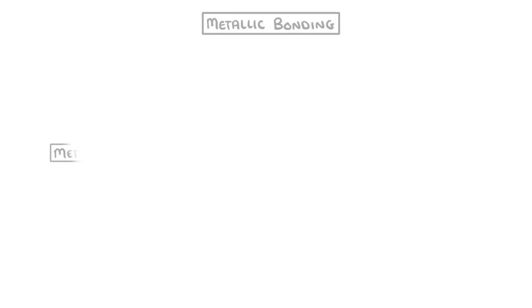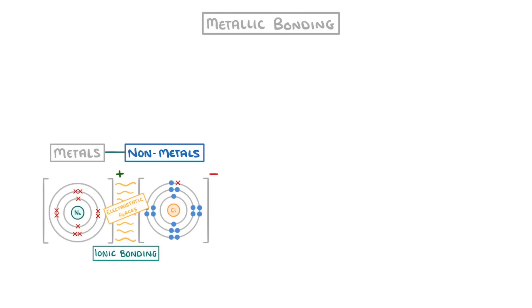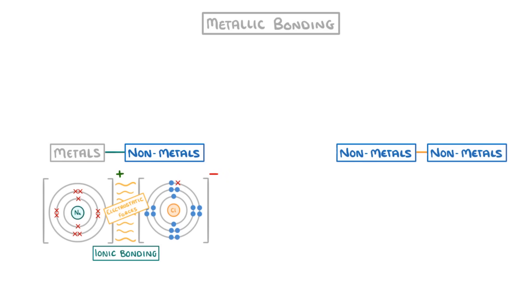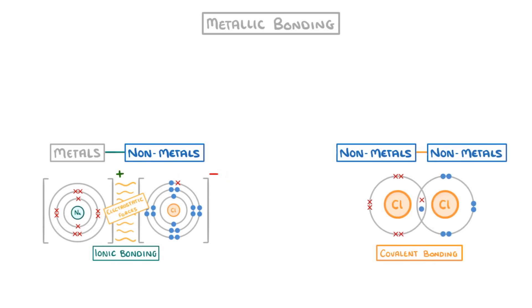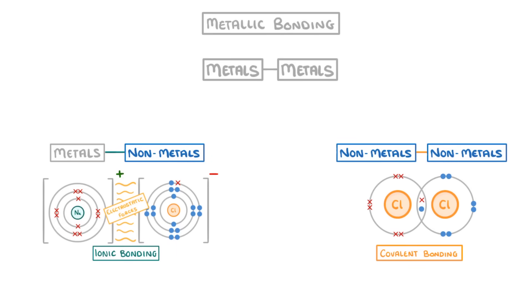To recap, we've already seen that metals bond to nonmetals through ionic bonding, and that nonmetals bond to other nonmetals through covalent bonding. Now we turn to how metals bond to other metals, which we call metallic bonding.